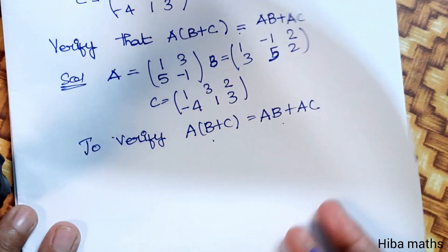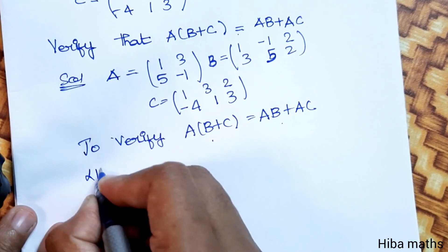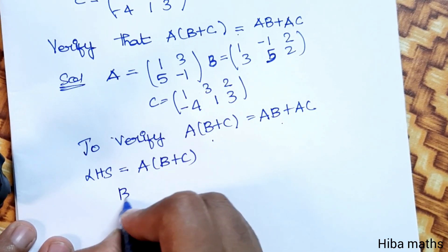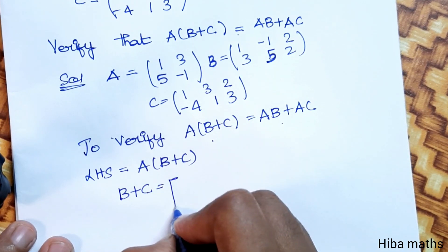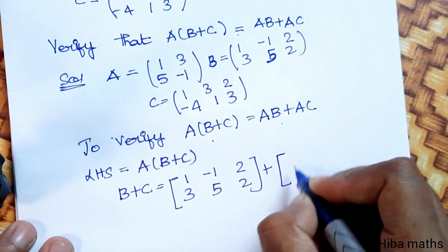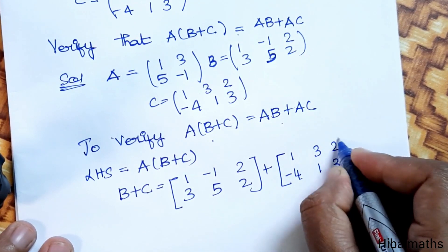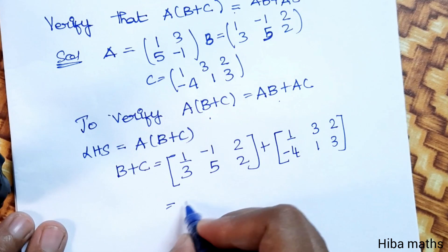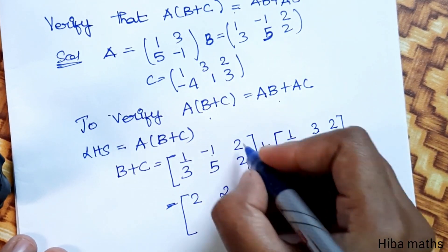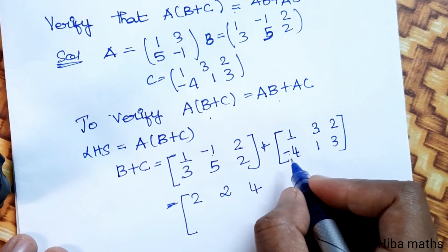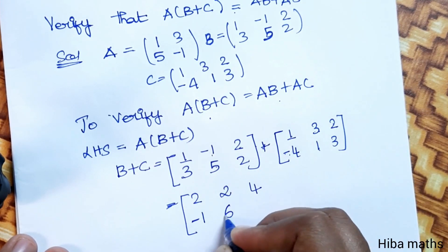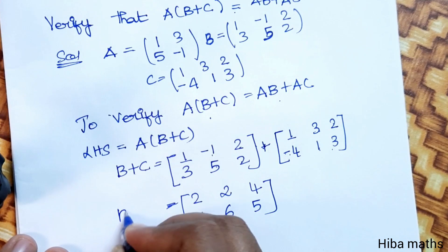LHS: left hand side is equal to A into (B plus C). We first compute the bracket, B plus C. B matrix is [1,-1,2;3,5,2] plus C matrix [1,3,2;-4,1,3]. Adding: first row gives [2, 2, 4], second row: 3 minus 4 is -1, 5 plus 1 is 6, 2 plus 3 is 5. So B plus C equals [2,2,4;-1,6,5].